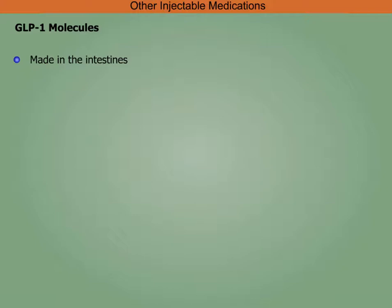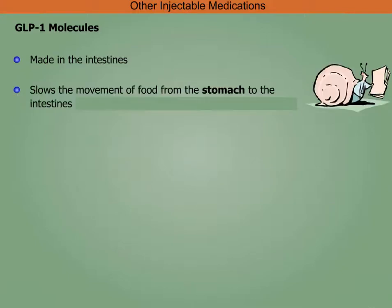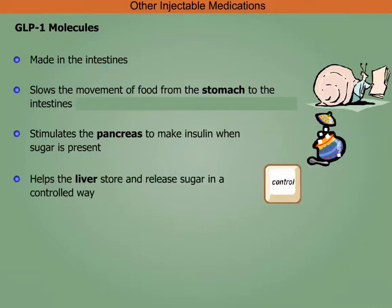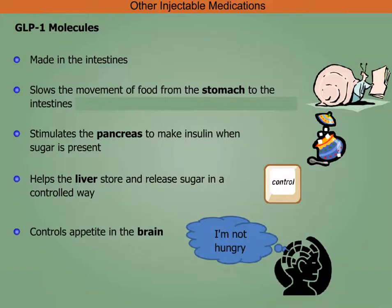GLP-1 molecules, made in the intestines, slow the movement of food from the stomach to the intestines so sugar is absorbed more gradually. They stimulate the pancreas to make insulin when sugar is present, help the liver store and release sugar in a controlled way, and control appetite in the brain.